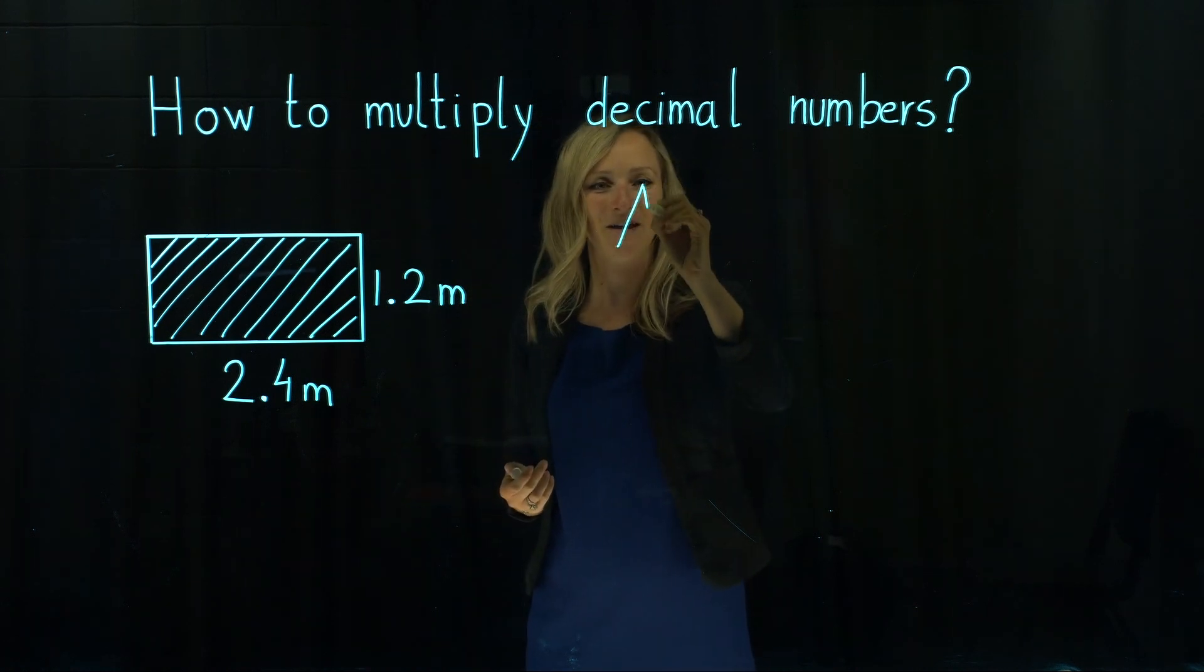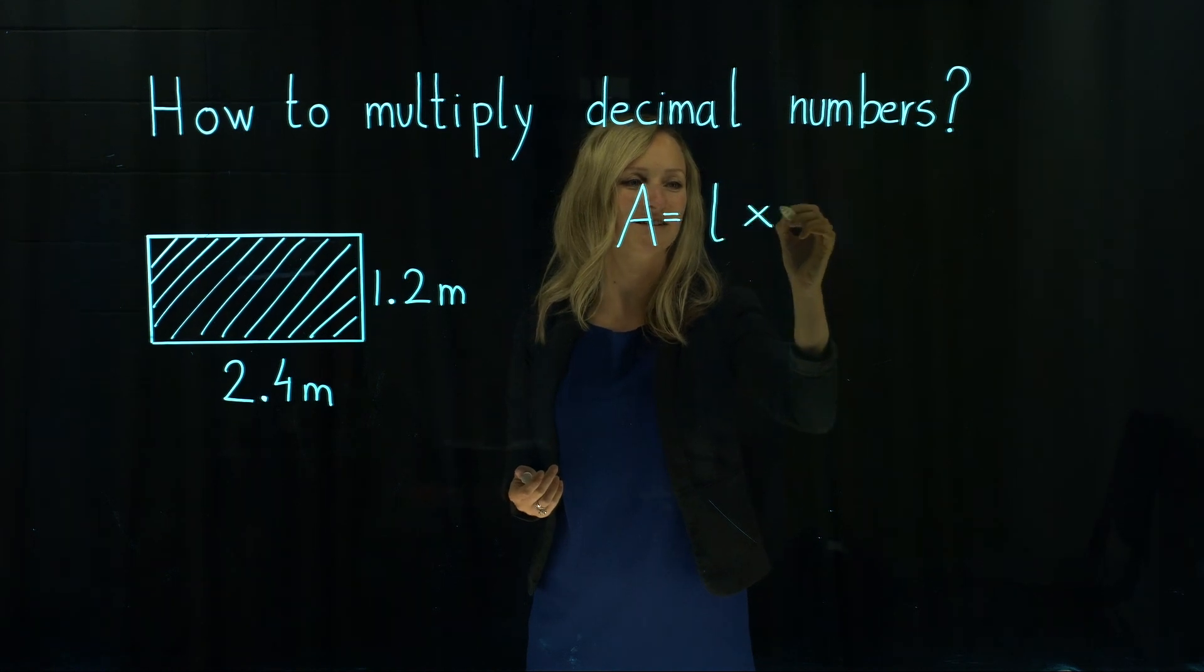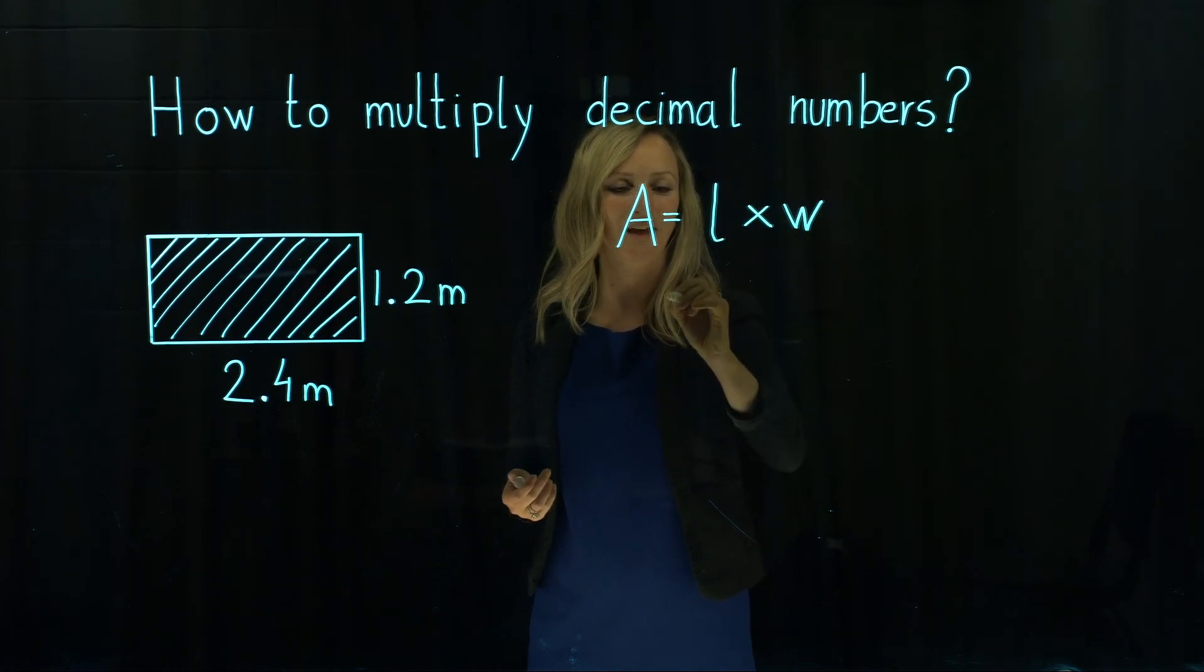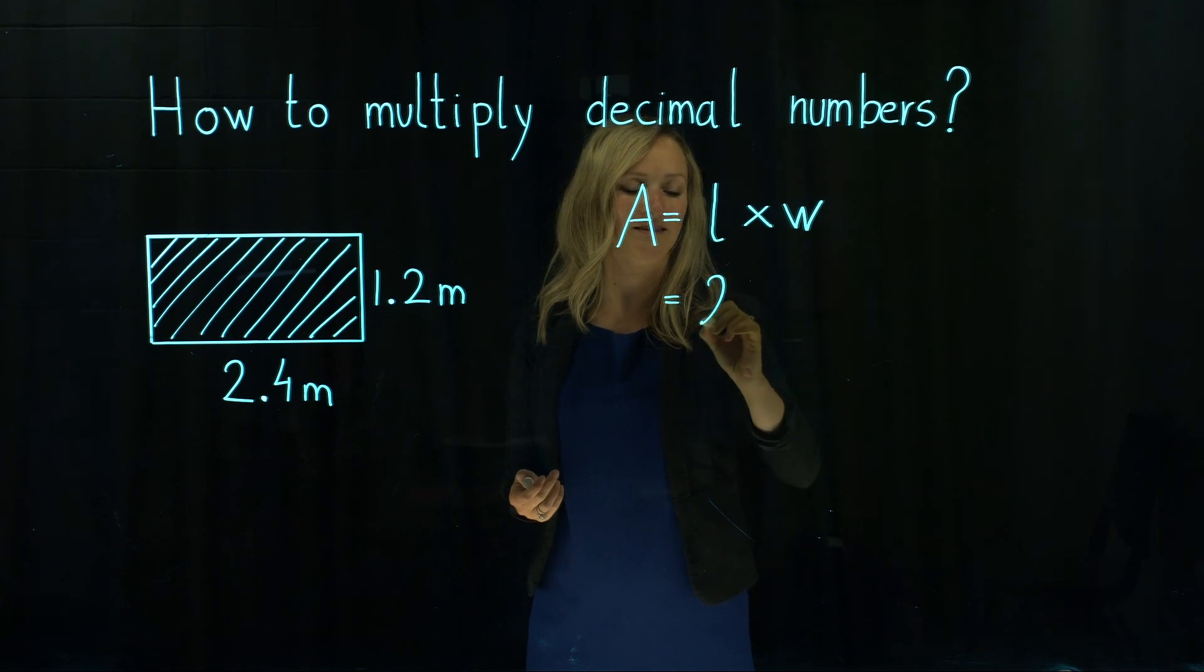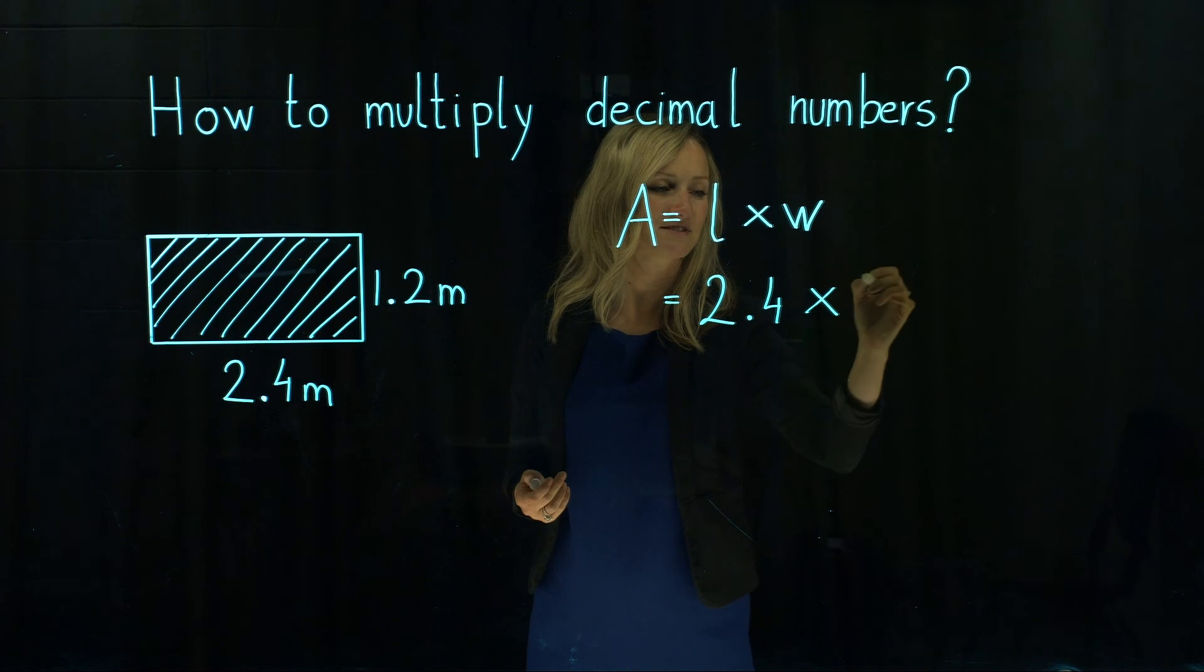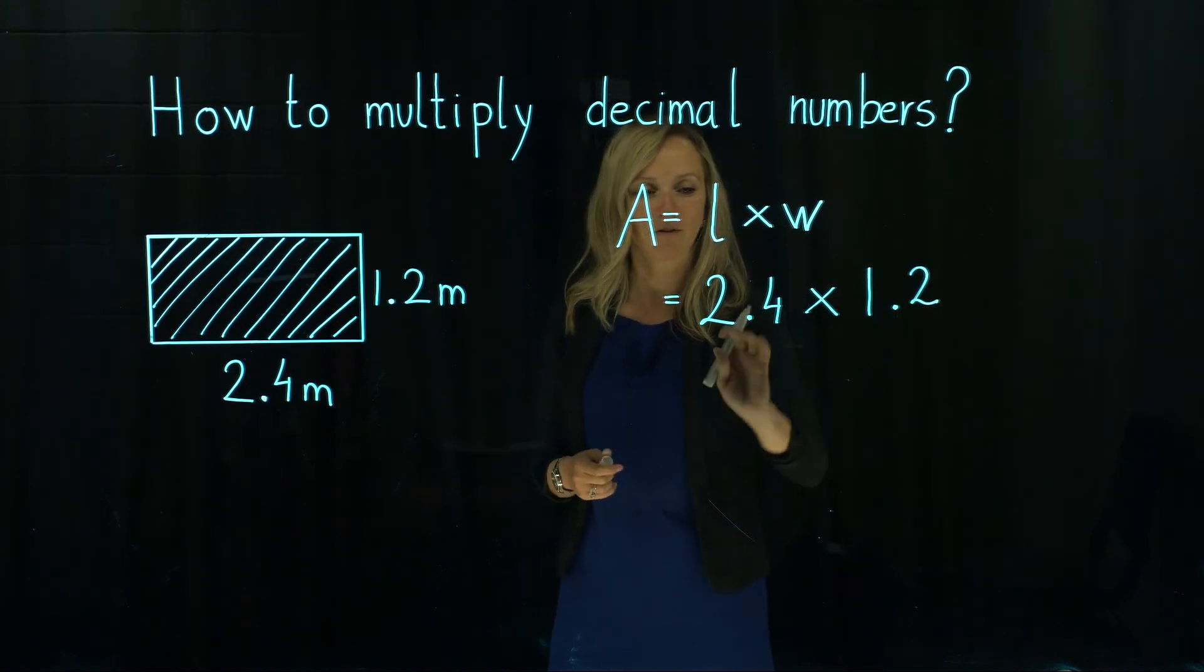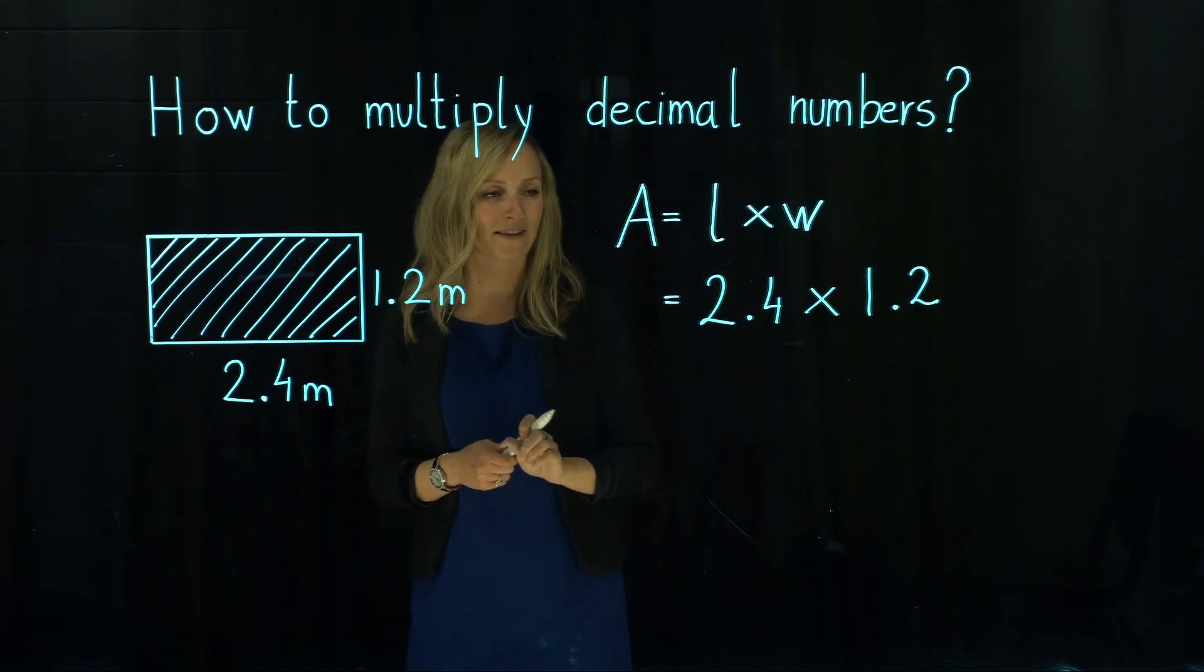So the area of the standard plasterboard we calculate as length times width. So the length is 2.4 times 1.2. We've got two decimal numbers and how do we multiply them?